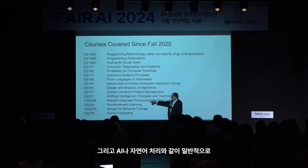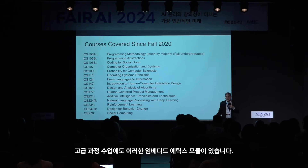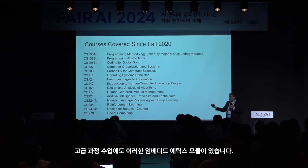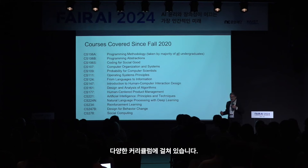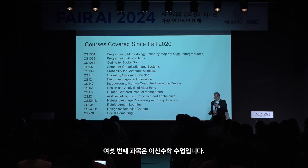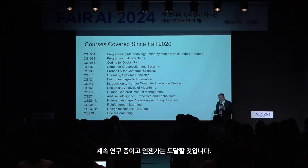More advanced classes like artificial intelligence and natural language processing also have embedded ethics modules—places where we'd naturally expect many ethical issues to arise. This covers a wide variety of the curriculum, including five of the six courses required for all undergraduate majors. The sixth is a discrete math class—a little trickier to embed ethics into, but we're working on it.